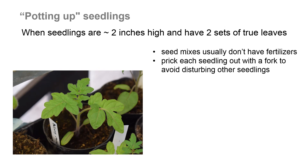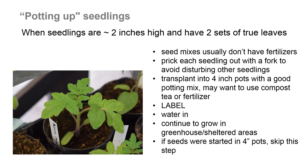When seedlings are about two inches high and have two sets of true leaves, we go through a process called potting up. Remember that seed mixes usually don't have very many nutrients, so you may find that your seedlings start to look a little sickly and need to be in better soil. One process is to prick each seedling out with a fork to avoid disturbing other seedlings if you have them in a large tray. If they're already in small pots, simply transfer them to larger pots. Typically, we transplant into four-inch pots with a good potting mix, and we might want to add a little compost to your fertilizer. Again, we want to make sure we label.